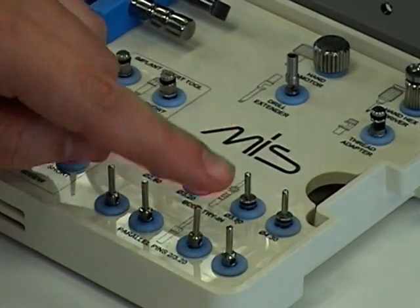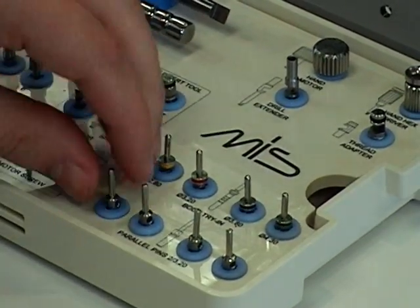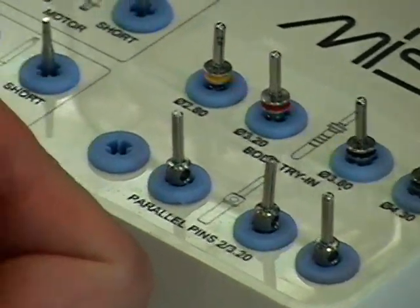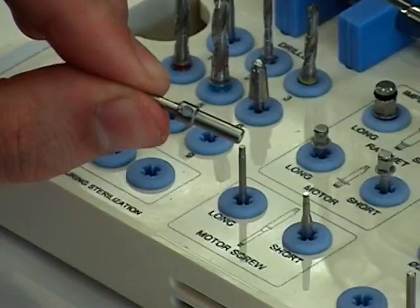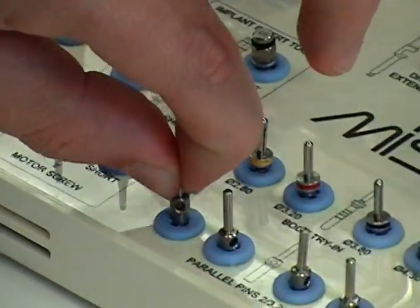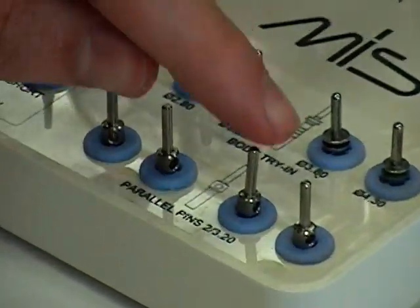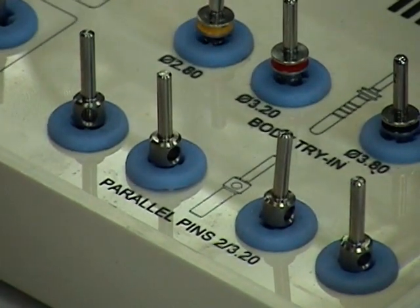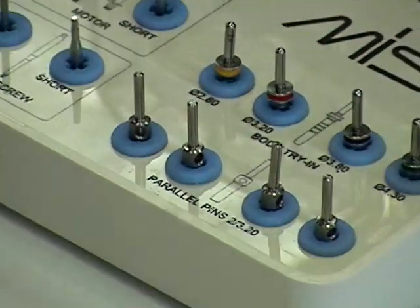Underneath that, you have a set of four identical parallel pins. One side is 2 millimeters diameter, the other side is 3.2 millimeters. So if you're drilling multiple sites, you can leave these in the previous osteotomies to verify the angulation to keep them parallel as you're placing additional sites.